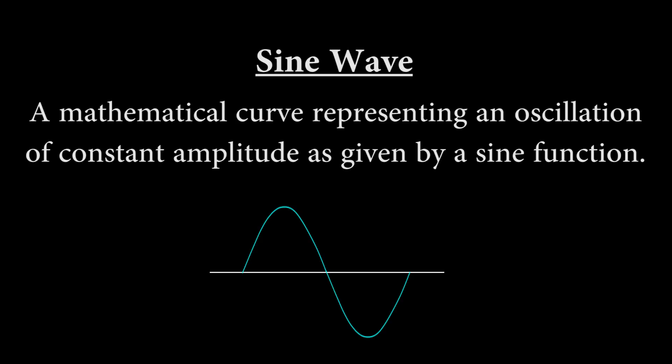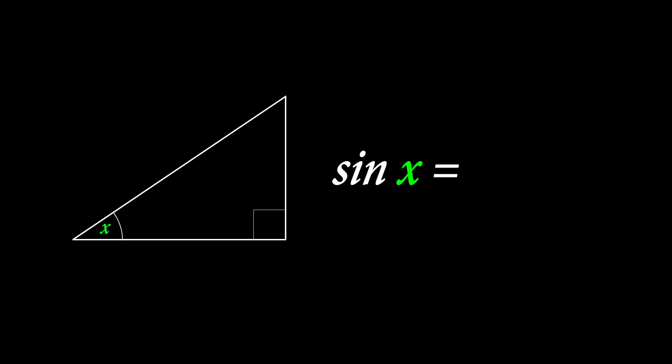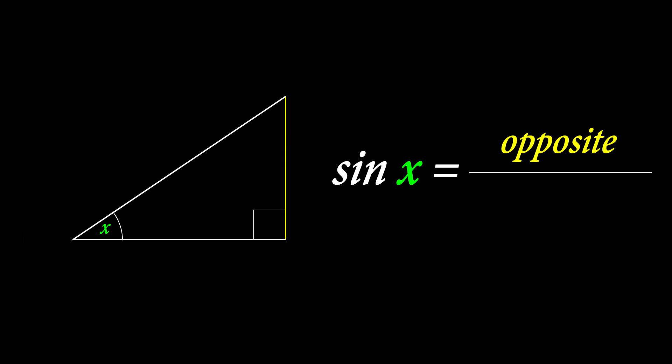A sine wave is a mathematical curve representing an oscillation of constant amplitude as given by a sine function. It's not necessary to understand the mathematics to understand sine wave motion, but I'll explain it briefly for those who are mathematically minded. Sine is a trigonometric function — the ratio of the length of the opposite side of a right angle triangle to the length of the hypotenuse.